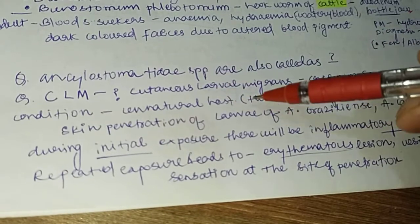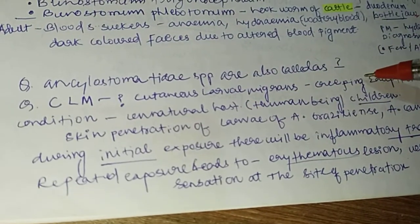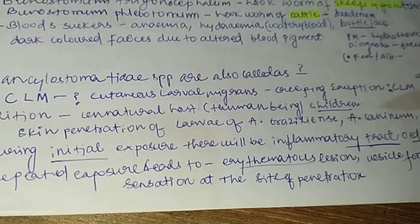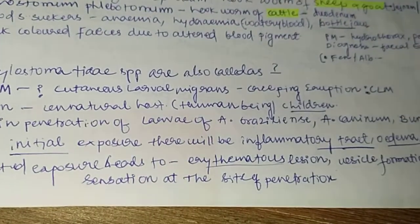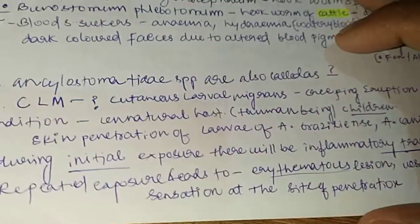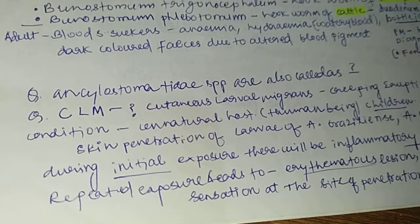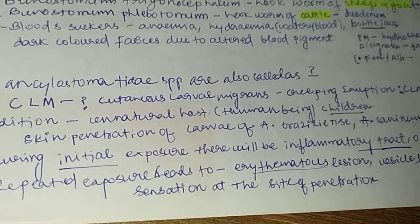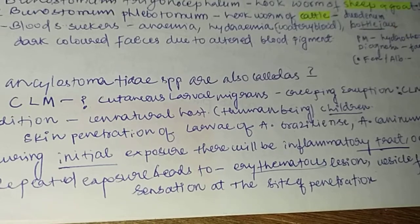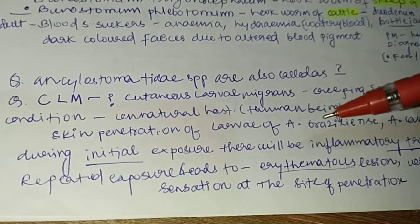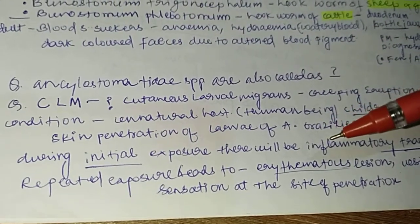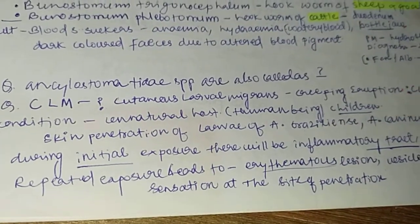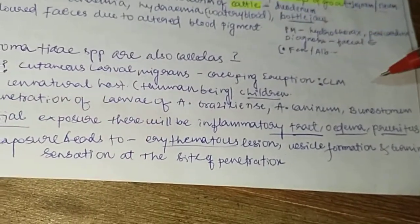Ancylostoma species are also called dash. What is cutaneous larva migrans? Cutaneous larva migrans is nothing but a creeping eruption — a condition in the unnatural host, mainly human beings, particularly children. This occurs due to skin penetration by larvae of Ancylostoma braziliensis, Ancylostoma caninum, and Buenostomum.